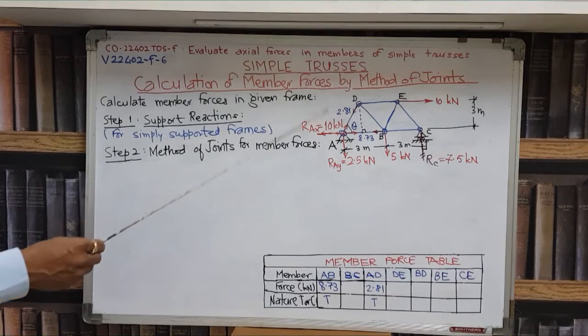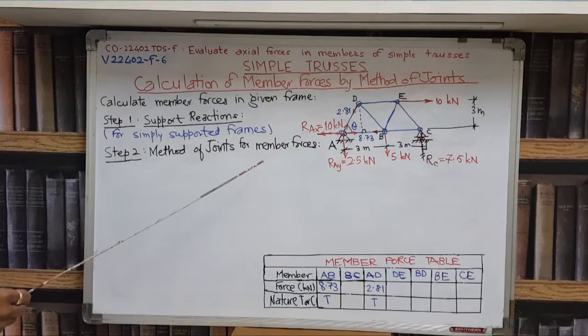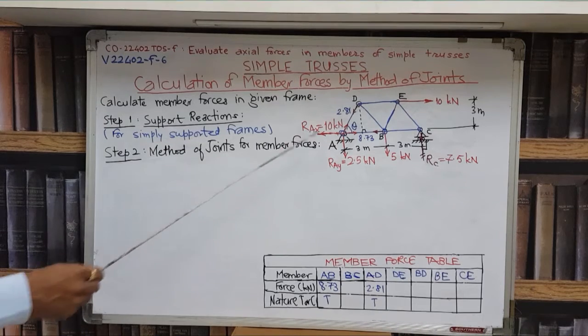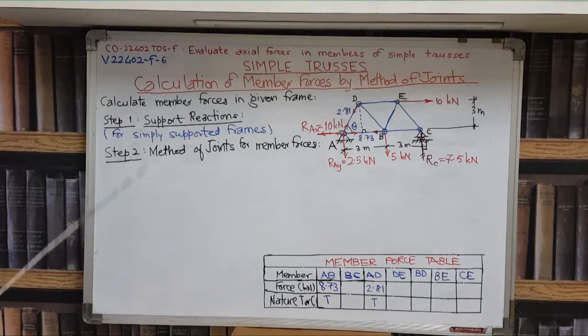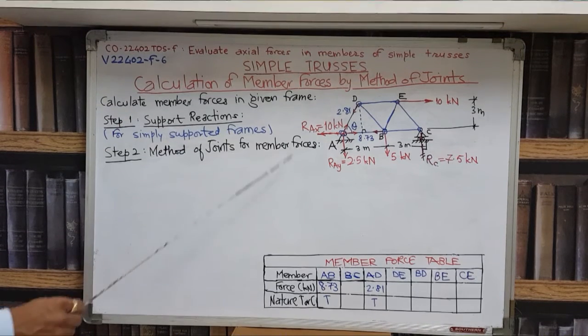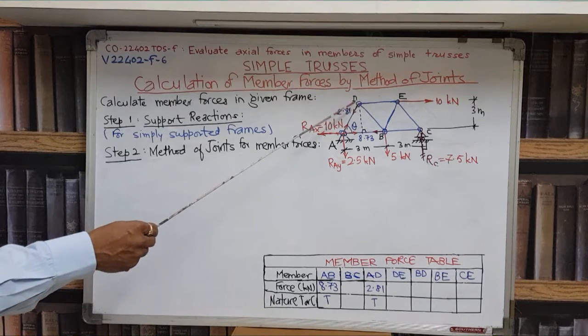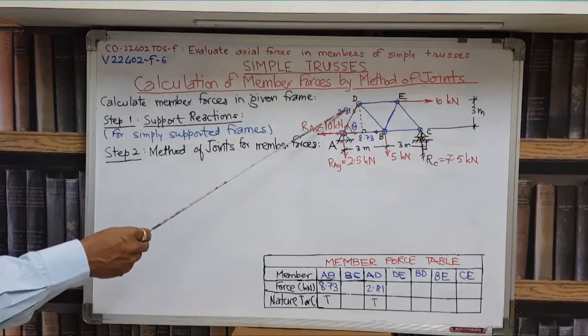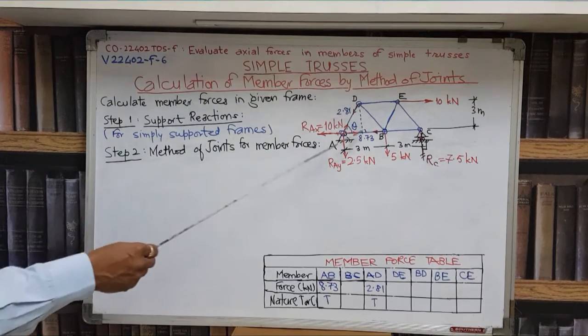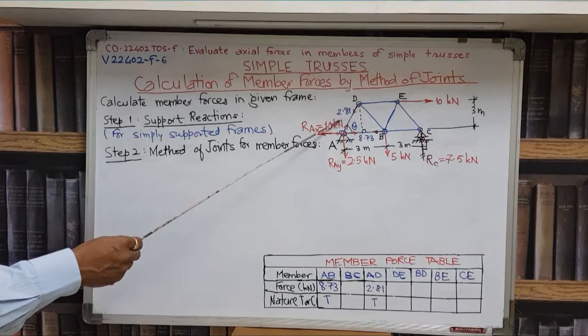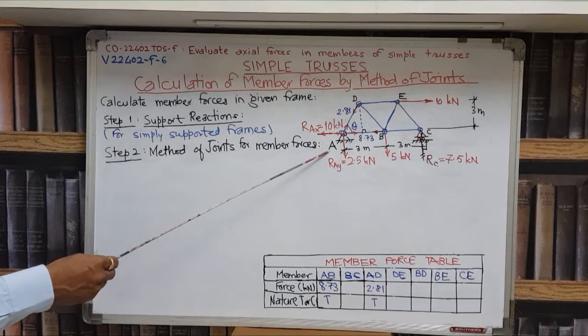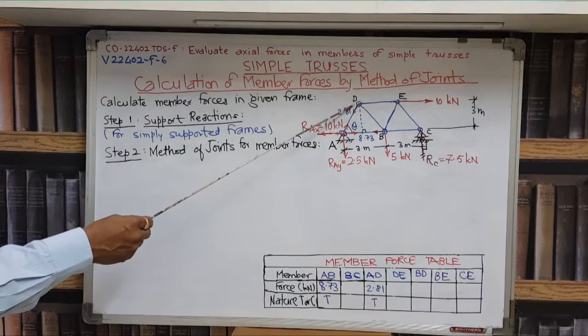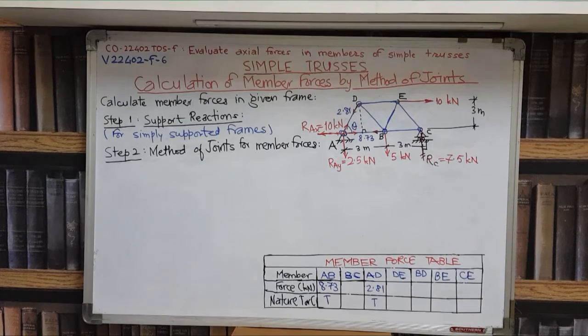Now we have to go for the next joint to get values of 2 more member forces. The choice of a joint is to be made with the condition that at that joint there should be maximum 2 unknown forces. So now let us look at joint D. At joint D there are 3 forces: DA, DB and DE. There is no external force but these 3 are internal forces. Out of these 3 forces, DA force is 2.81 kN which is already calculated. That is why the unknown forces are only 2: DE and DB. So we can very well consider joint D for analysis.